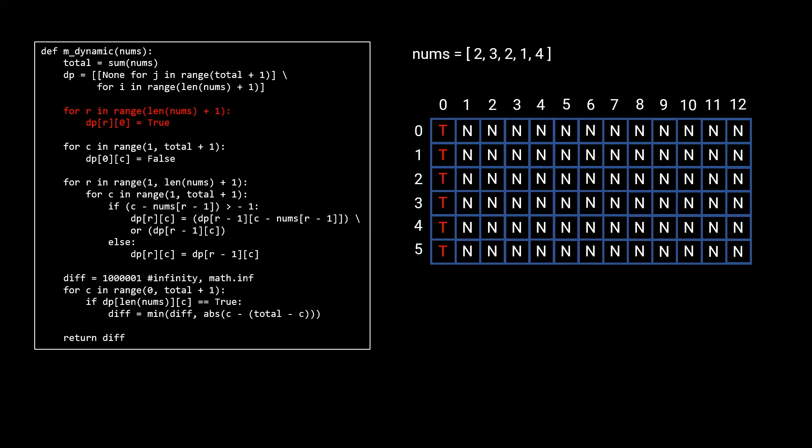The first for loop changes every value in the first column to true. These slots represent: 'can I use the first n numbers to sum to zero?' — which is always true because you can omit all numbers to get an empty set summing to zero. This handles one base case. The second for loop initializes all values in the first row to false except for the [0][0] slot. These slots ask if we can form some positive integer with zero numbers — which is impossible, so they're false. The [0][0] slot is true because we can form zero with no numbers.